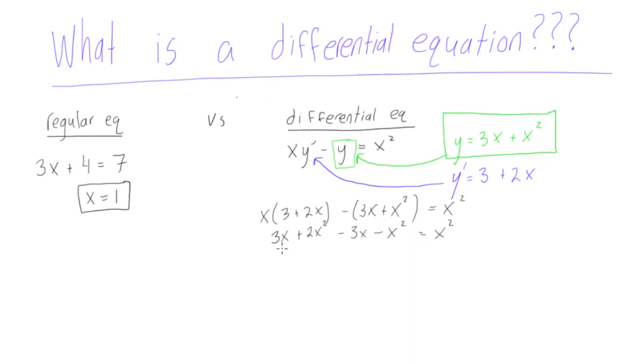Alright, we can simplify this a little. We have 3x minus 3x, get rid of that. And we have 2x squared minus x squared. So we can get rid of that 2 and get rid of this guy. And that leaves us with x squared is equal to x squared.